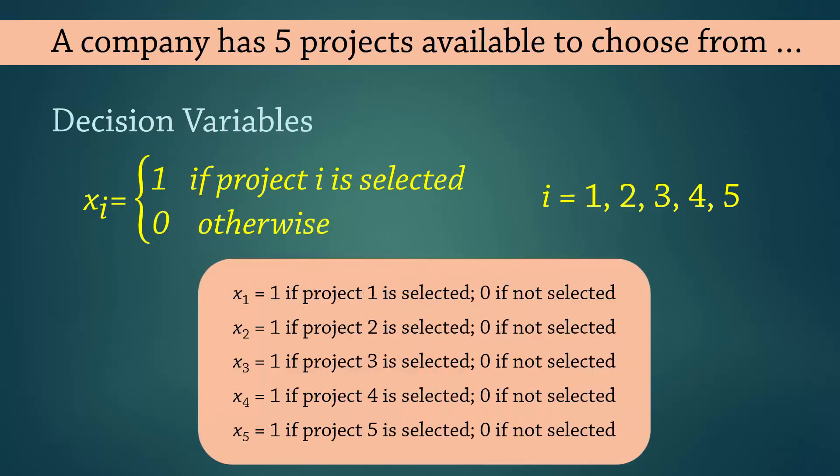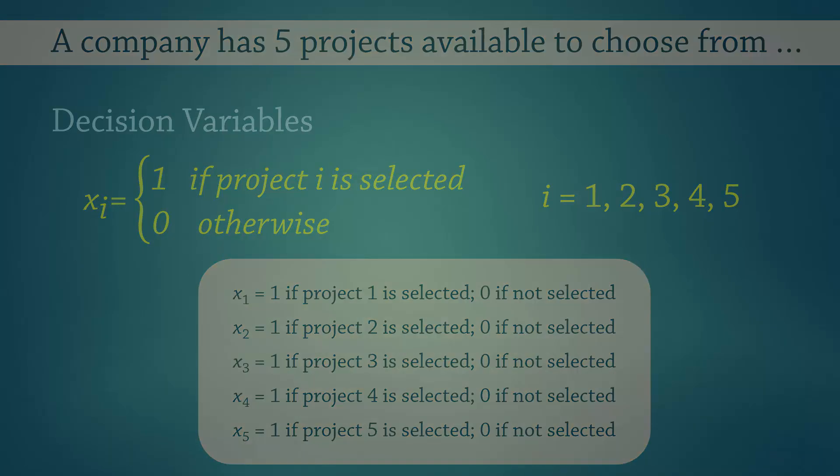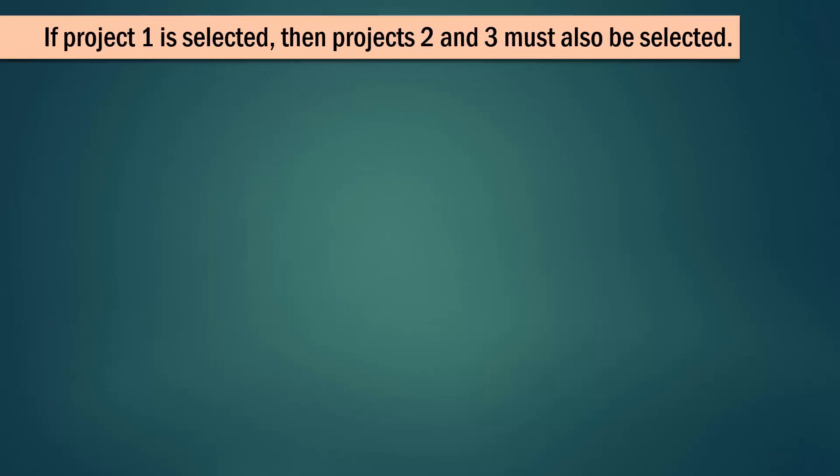Now consider this requirement: if project 1 is selected, then projects 2 and 3 must also be selected. Think of it as a child invited to a party where both parents must be attending.